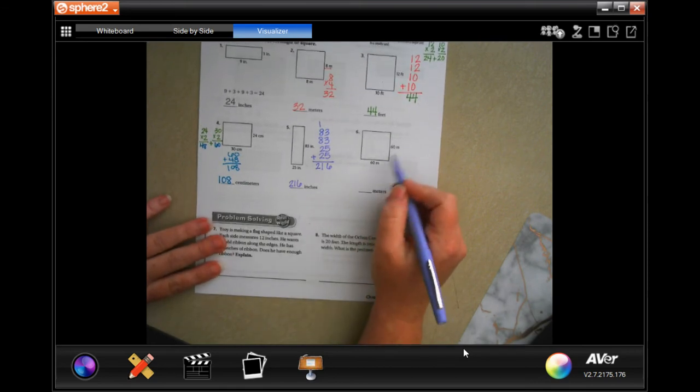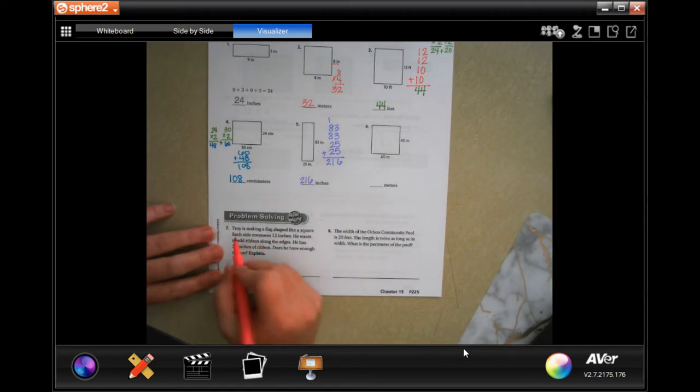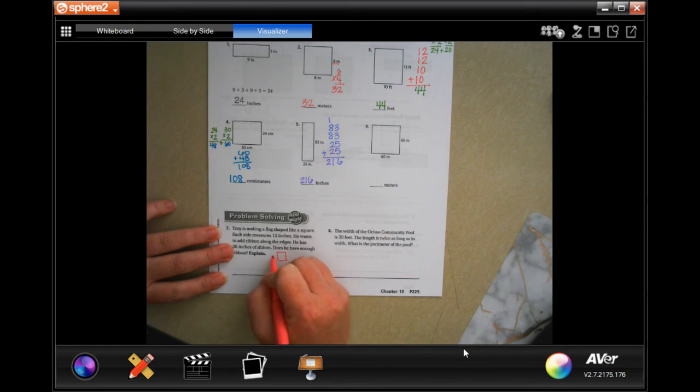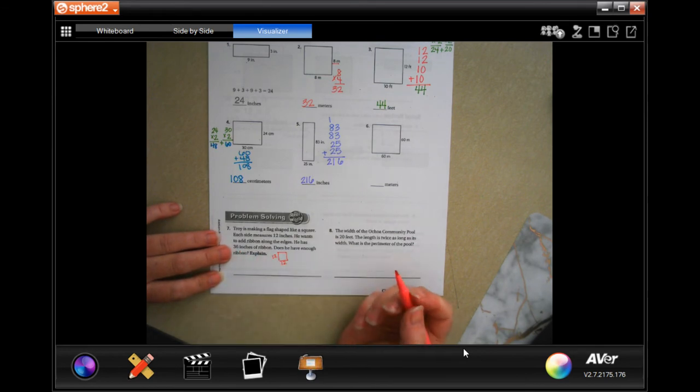This one's a square, so they're the same all the way around. Troy is measuring a flag shaped like a square. Each side measures 12 inches. He has 36 inches of ribbon. Does he have enough?